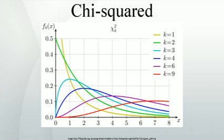If X₁ ~ χ²(k₁) and X₂ ~ χ²(k₂) are statistically independent, then X₁ + X₂ ~ χ²(k₁ + k₂). If X₁ and X₂ are not independent, then X₁ + X₂ is not chi-squared distributed.